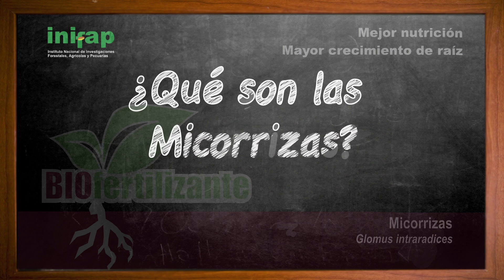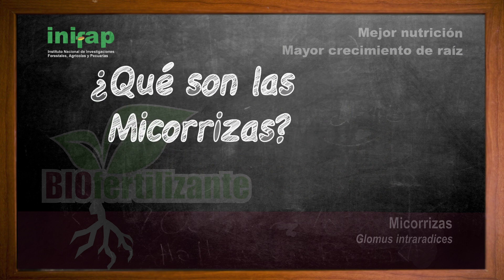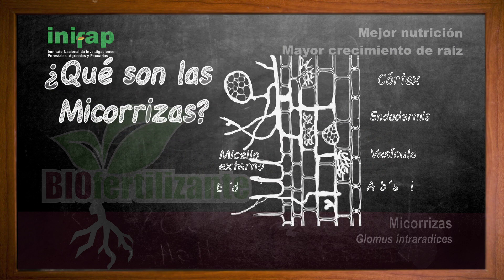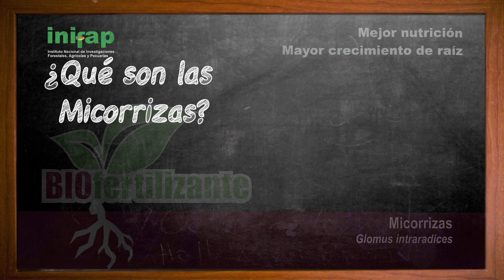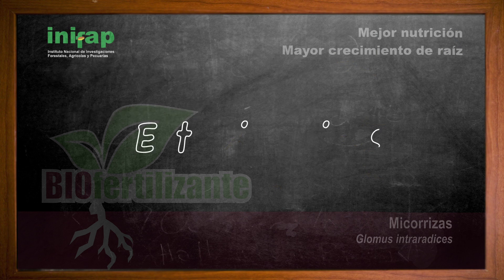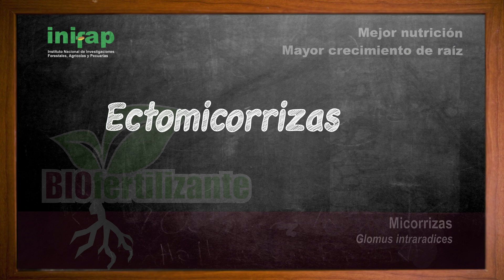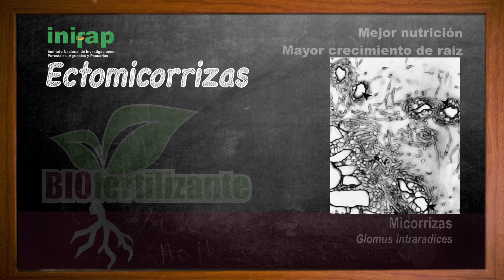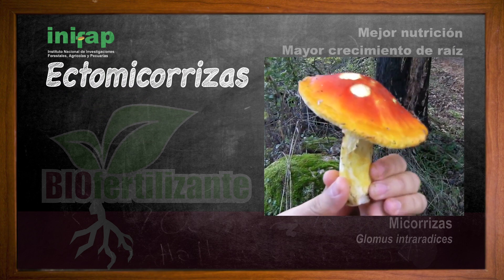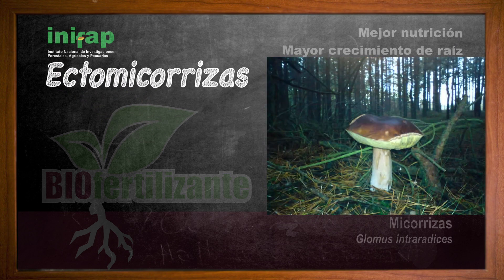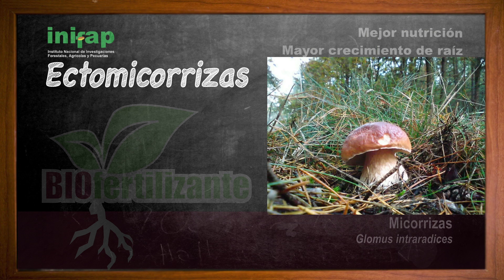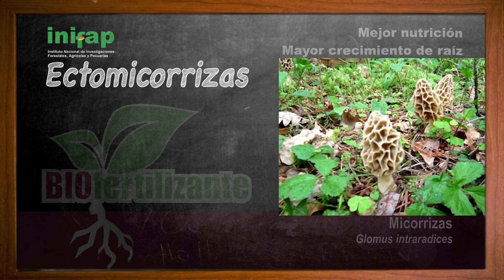Una micorrisa es la asociación de un hongo con las raíces de la planta para favorecer su nutrición. Los hongos micorrísicos que se pueden ver a simple vista, llamados ectomicorrisas, cuya asociación es por medio de pequeños hilos llamados hifas que se enredan a las raíces, se encuentran comúnmente en los árboles forestales.